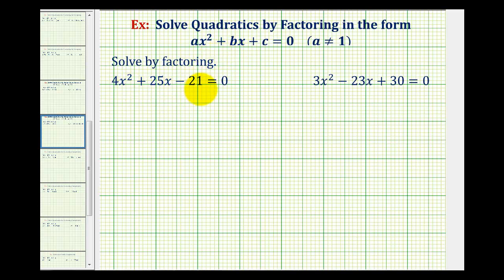So looking at our first example, notice that four is not a common factor among these three terms. So if this does factor, it will factor into two binomial factors.